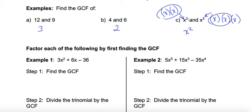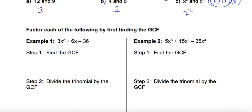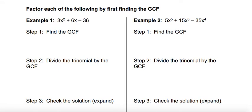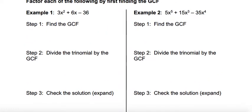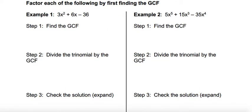This can be sort of confusing to think about at first, so if you have any questions please post them in the appropriate discussion board or send me an email. Let's look at some examples and think about how to use the steps to common factor. For the first example we have the polynomial 3x squared plus 6x minus 36, and we want to look for the greatest common factor.